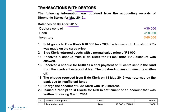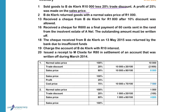Sold goods to Beard de Klerk for R10,000 less 20% trade discount. We have to calculate the sales price and the cost price. We give them 20% trade discount, so the normal sales price is 100%, trade discount is 20%, and the sales price is 80%. The normal sales price equals R10,000, so trade discount is 20% of R10,000, which gives R2,000. We are selling the goods at a reduced price of R8,000.